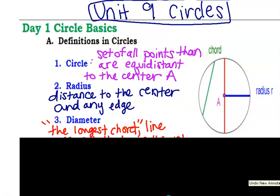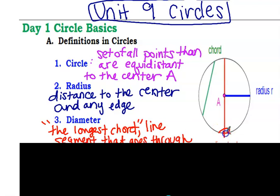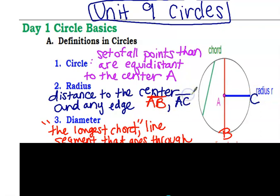The radius is the distance from the center to any edge of the circle. So one example: let's make this point B right here. So AB would be the radius — that could be one of the radiuses. Or if this was AC, AC could also be a segment — it's from the center to the outside.